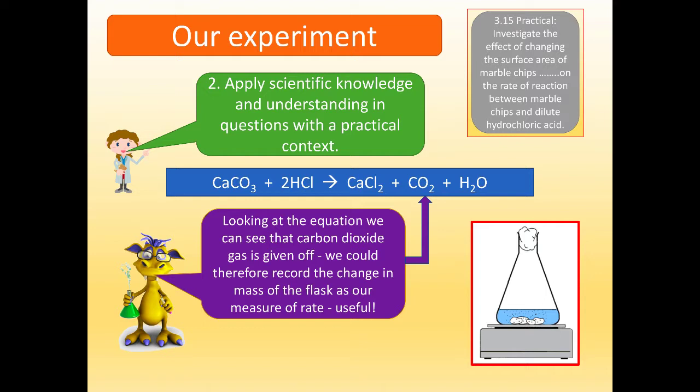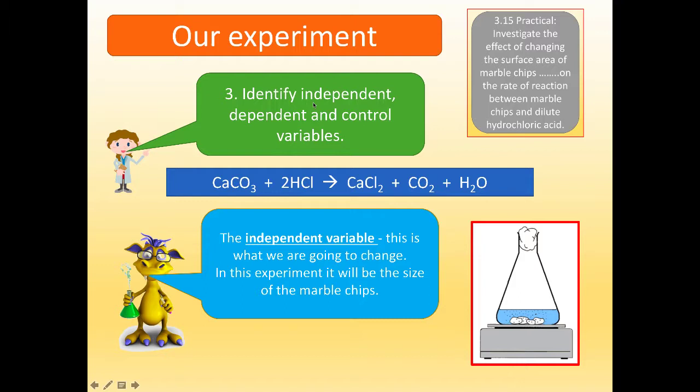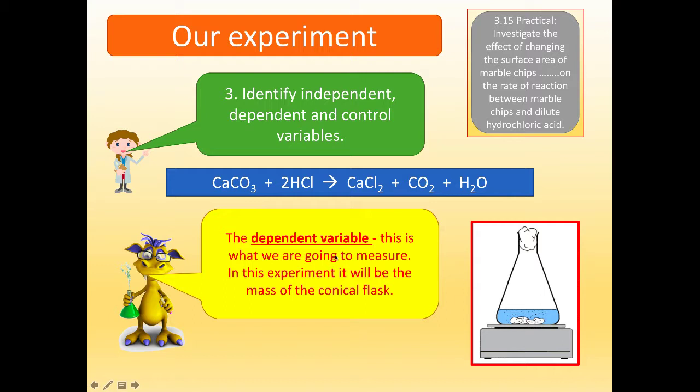Number three. Before we start doing an experiment, we've got to identify independent, dependent and controlled variables. Now, many people find this a bit of an issue. Let's look at this carefully. When we're talking about the independent variable, we're talking about what we're going to change. What is it changing in the experiment? In this experiment, what we're changing is the size of the marble chips. So the size of the marble chips is our independent variable. Our dependent variable is what we're going to measure. In this experiment, what we're going to measure is the mass of the conical flask as the reaction progresses.